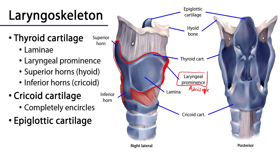Looking posteriorly, there are two sets of horns — a superior horn and an inferior horn. The superior horn is in line with the greater horn of the hyoid bone, and these two articulate via the thyrohyoid membrane. The inferior horn forms a joint with the cricoid cartilage — that's the cricothyroid joint — upon which the cricothyroid muscles, which are intrinsic muscles of the larynx, can work. When these muscles fire, the thyroid cartilage tips anteriorly and inferiorly, putting tension on the vocal folds to increase pitch.